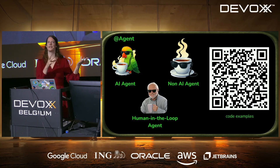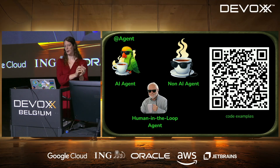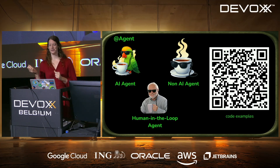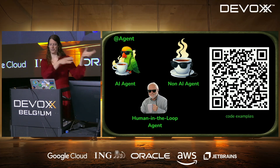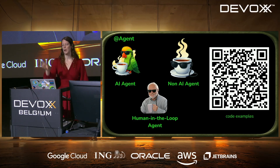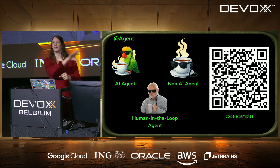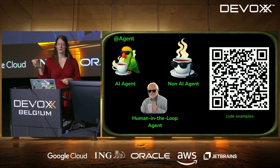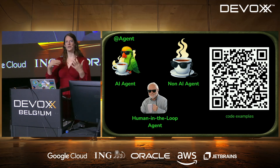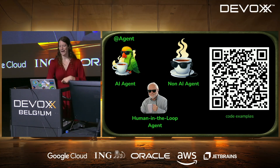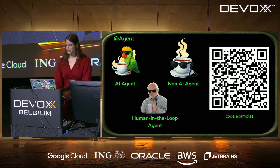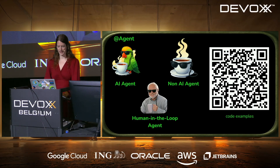Let's look at the different types of agents we support. We have AI agents, which are these AI services with an LLM at their core. We also have non-AI agents — and I share Rod's opinion: whatever you can outsource to normal code, use a non-AI agent. It's just your normal code wrapped in an agent so you can put it in the workflow wherever it makes sense. And we have human-in-the-loop agents too, because very often you need some human interaction to say yes, continue, or no, or to provide extra information.